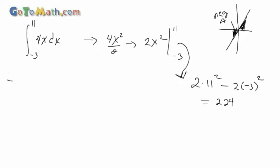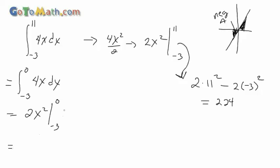So let's try it this way. To find the actual area, we're going to break this up into two pieces. We'll go from negative 3 to 0 of 4x dx. We know the integral of 4x dx, so this is 2x squared from negative 3 to 0. We plug in the upper bound: 2 times 0 squared, minus the lower bound — negative 3 squared is 9, times 2 is 18 — so we end up with minus 18. You notice this is negative, and we can't have a negative area, so we just make this positive.